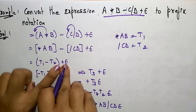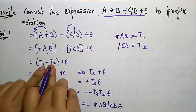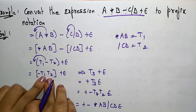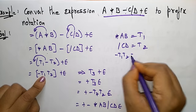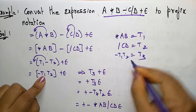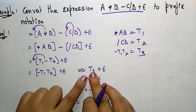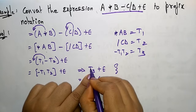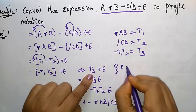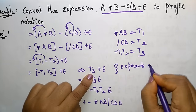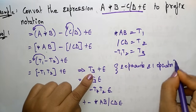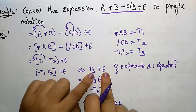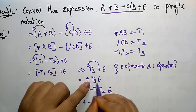So replacing star AB with T1 and division CD with T2 gives: T1 minus T2 plus E. Here you can observe two operands and one operator. Apply the prefix: minus T1 T2. Now minus T1 T2 is replaced with T3. So T3 plus E — the expression now reaches two operands and one operator.